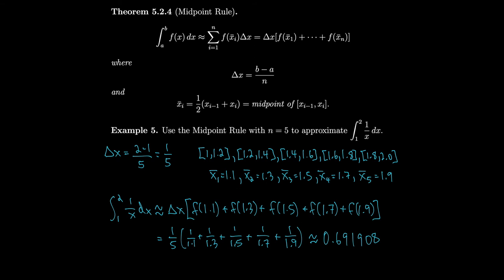Notice that this midpoint rule approximation is the same in form as a right sum or left sum — they all use some choice of sample points. If you take the limit, the approximation becomes an equality. And because the choice of sample points doesn't matter in the limit, without the limit it's just an approximation for the integral — it doesn't give you the exact value.